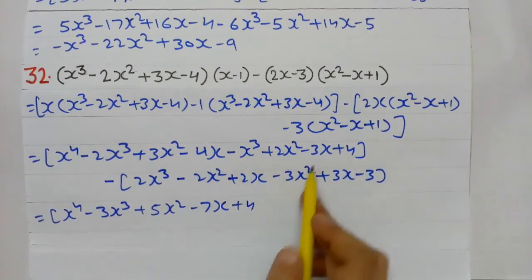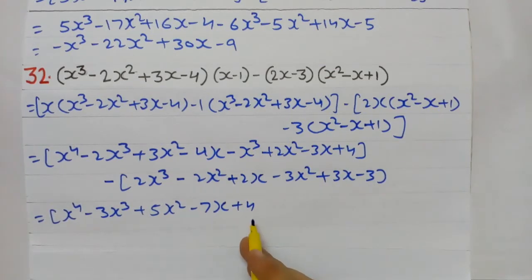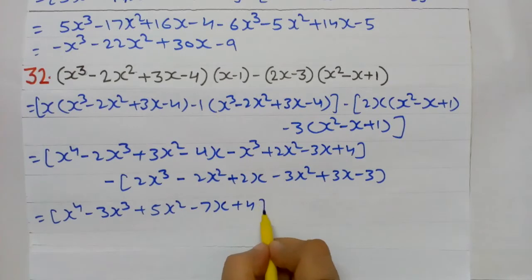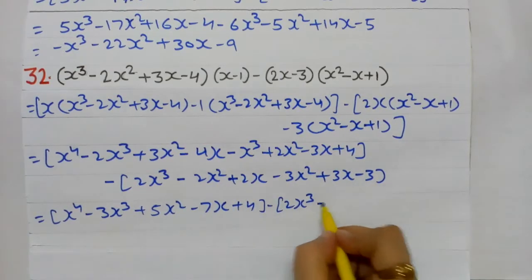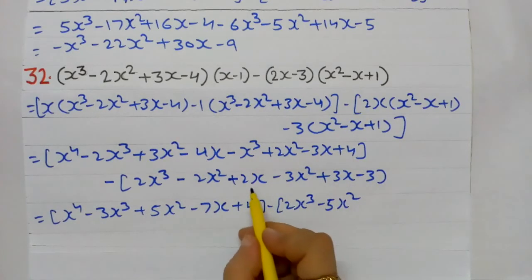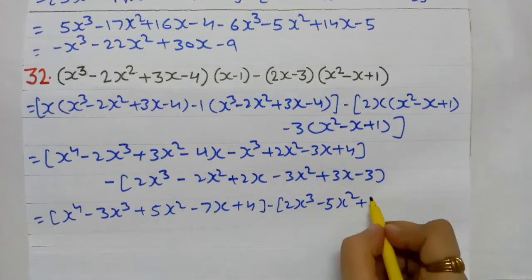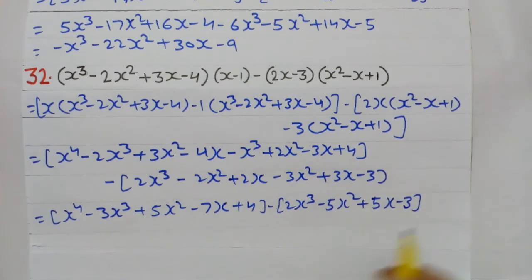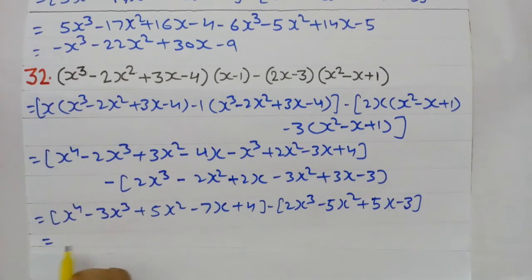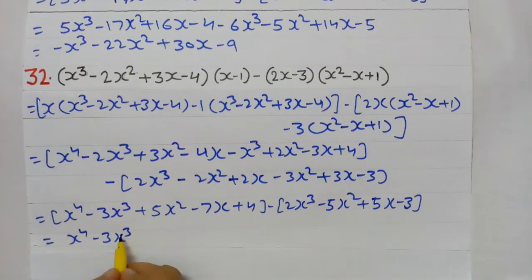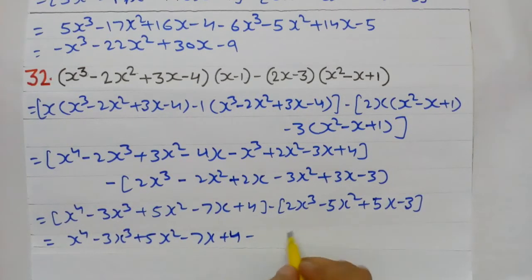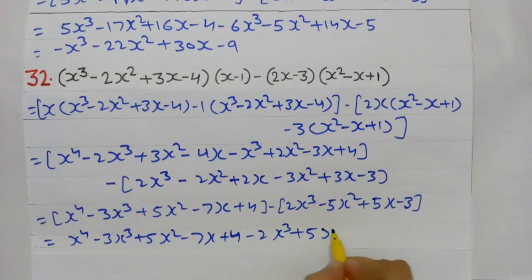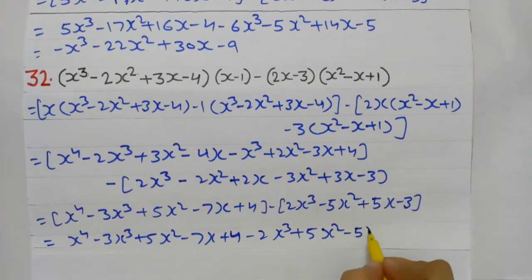Now solving brackets: First bracket gives x⁴ − 3x³ + 5x² − 7x + 4. There is a minus before the second bracket, so signs change: minus 2x³ gives −2x³, plus 5x² becomes +5x², minus 5x, plus 3. Now solving like terms: x⁴ as is. −3x³ − 2x³ = −5x³. 5x² + 5x² = 10x². −7x − 5x = −12x. 4 + 3 = 7.